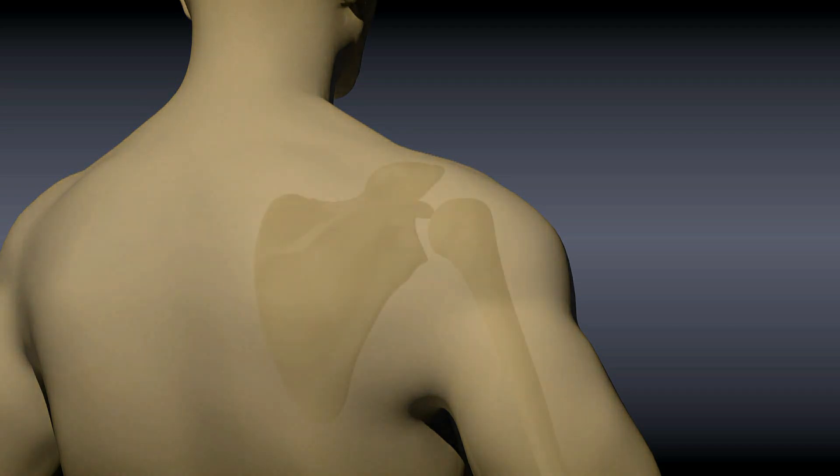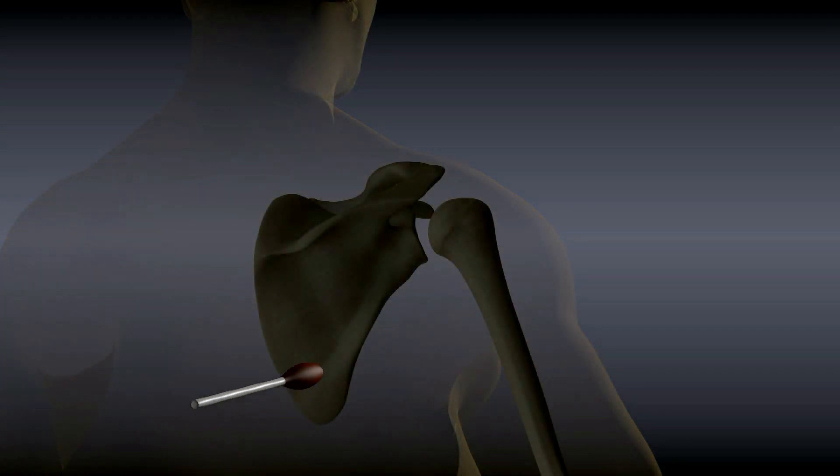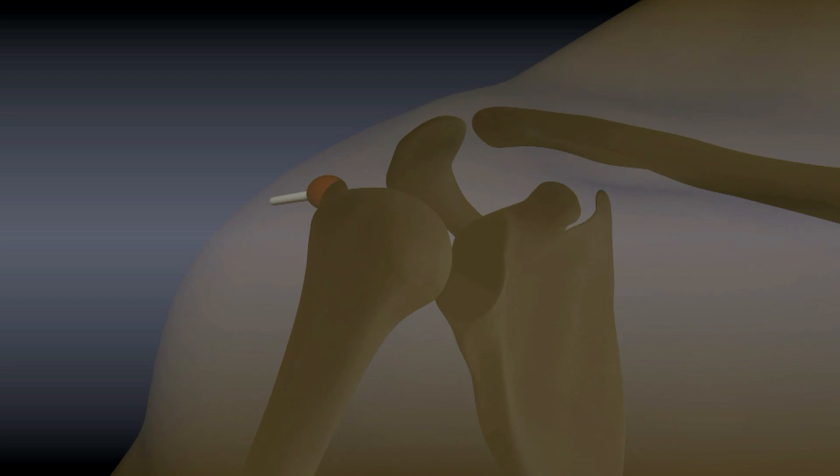The injection site is then cleansed, often with alcohol and betadine, to prevent introducing infection into the shoulder.